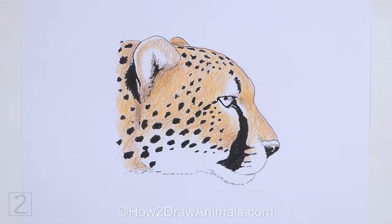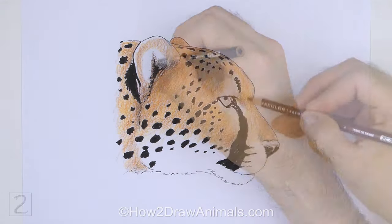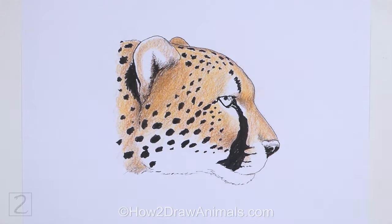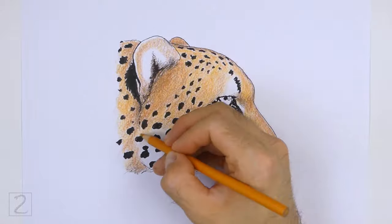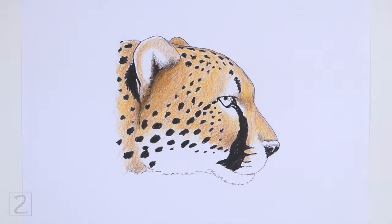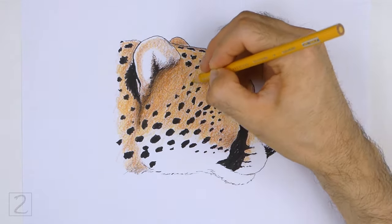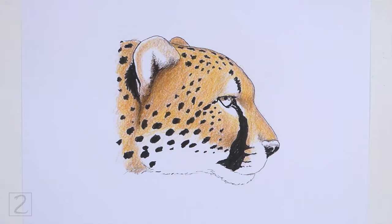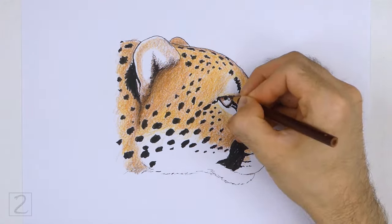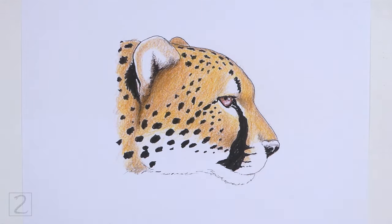Use brown to create shadows. Shadows will give the head more dimension and volume. Pick a light source as you add the shadows so that they're consistent throughout the head. Here the light source is coming from the top, so most of the shadows will be on the underside of the shapes.